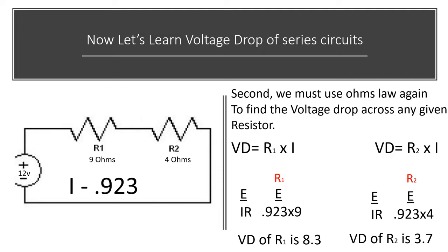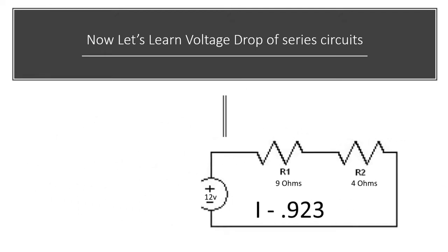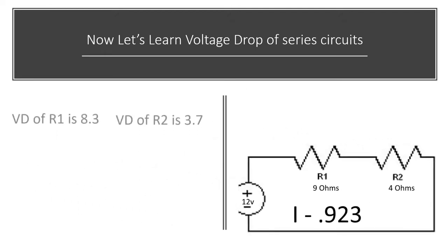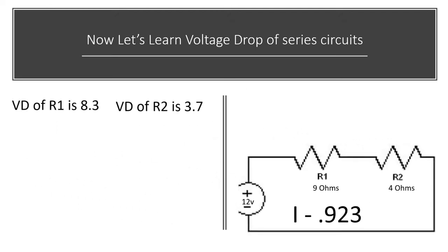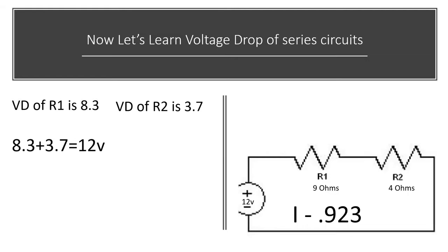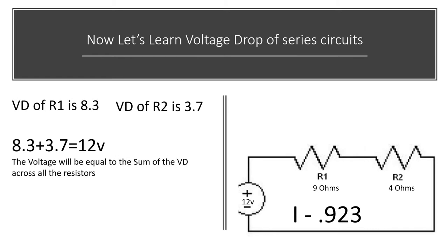Now I want to point something out: if you add those two voltage drops together, it is gonna equal the total voltage of the circuit. The voltage drop of R1 is 8.3 and the voltage drop of R2 is 3.7 — 8.3 plus 3.7 equals 12 volts. The voltage will equal the sum of the voltage drops across all resistors, and that's how you double-check your work.